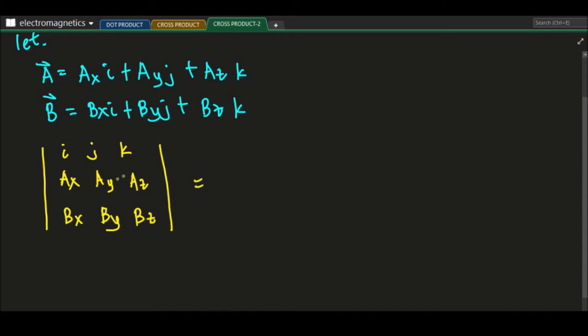Then we just use the Sarrus method. So we just cover i. We just write i here. So we will get the vector, this A y, B z, then B y, A z. So this vector. So we have A y, A z, B y, B z.